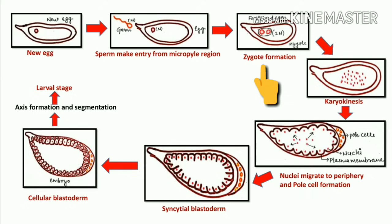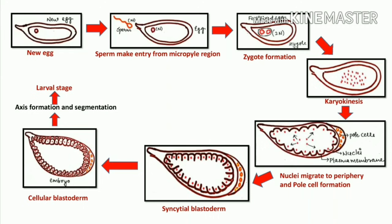This zygote is diploid in nature because it has one set of chromosomes from the mother and one from the father. After that there is occurrence of karyokinesis — karyo means nucleus, kinesis means division. The cytoplasm of the zygote remains totally constant but the nuclei start dividing rapidly. There is no division of cytoplasm; only the nucleus divides and cytoplasm remains constant.